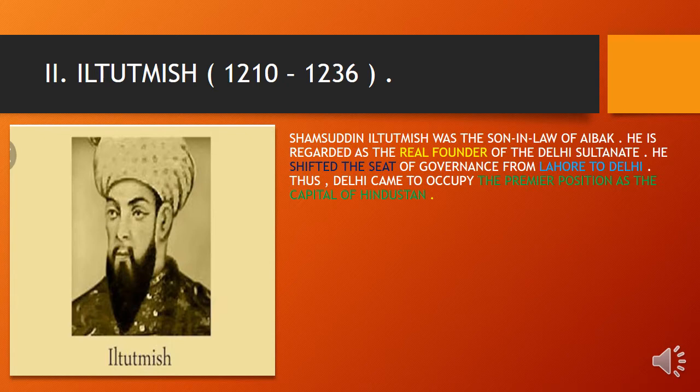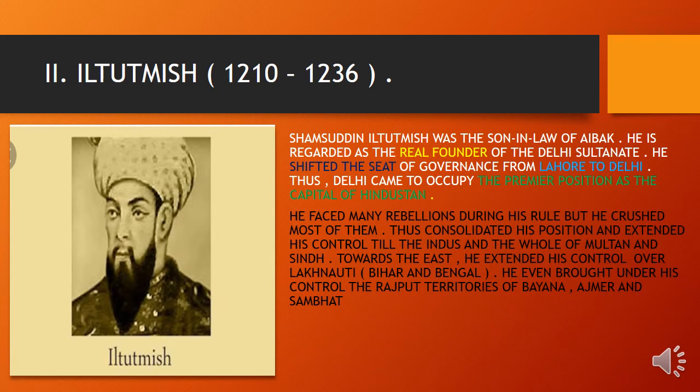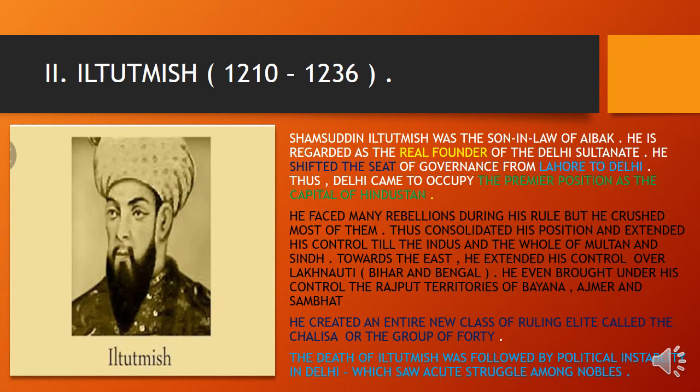Iltutmish faced many rebellions during his rule but crushed most of them, consolidating his control till the Indus and the areas of Multan and Sindh. Towards the east, he extended control over Lakhnauti in Bihar and Bengal, and brought under his control Rajput territories of Ranthambore, Ajmer, and Sambhar. He also created an entirely new class of ruling elite called the Chalisa, or the group of 40. After his death, Delhi saw political instability and acute struggle among the nobility.